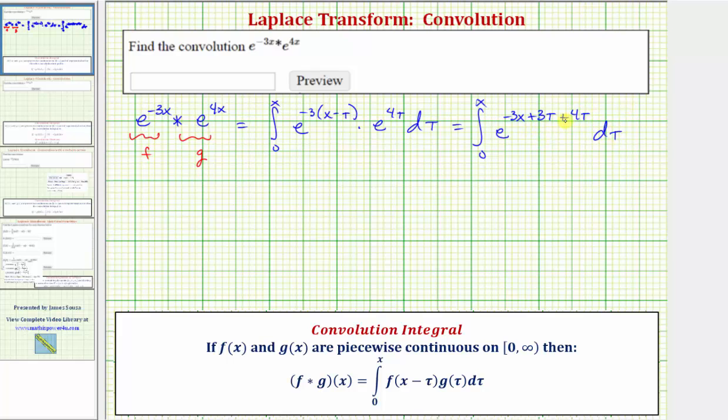Notice how we can combine like terms here. So we've got the integral from zero to x of e raised to the power of negative 3x plus 7 tau d tau.